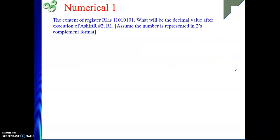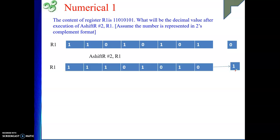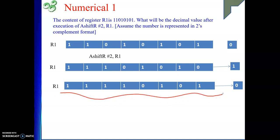Then we will see another numerical. The content of register R1 is given. This time they ask specifically for the decimal value after execution of SHR — arithmetic shift right — by 2 bit positions for R1, and numbers are represented in 2's complement format. We will shift it one bit position at a time — not both bits together. After one shift, this bit comes here, and so on. Then we apply again. Ultimately, we get the final result. The result after two shifts is clear.